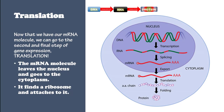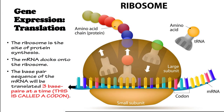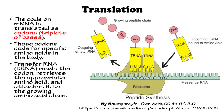Now that we have our mRNA molecule, we can go to the second and final step of gene expression, which is translation. The mRNA molecule leaves the nucleus and goes to the cytoplasm, where it finds a ribosome and attaches to it. The ribosome is the site of protein synthesis. The mRNA docks onto the ribosome, and the base pair sequence of the mRNA will be translated three base pairs at a time. This is called a codon. These codons code for specific amino acids in the body. Transfer RNA, or tRNA, reads the codon, then retrieves the appropriate amino acid and attaches it to the growing amino acid chain.